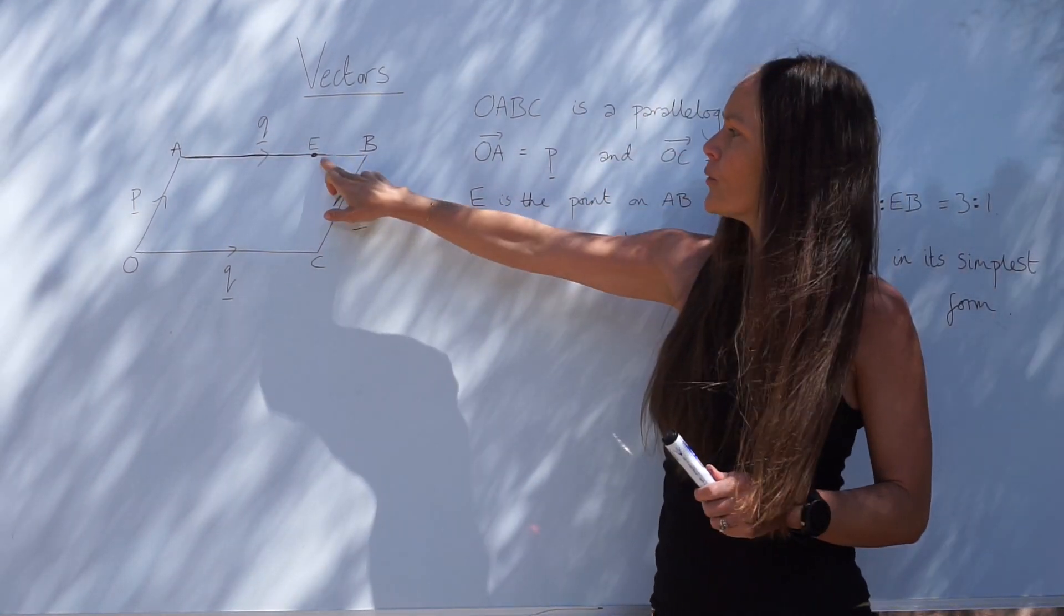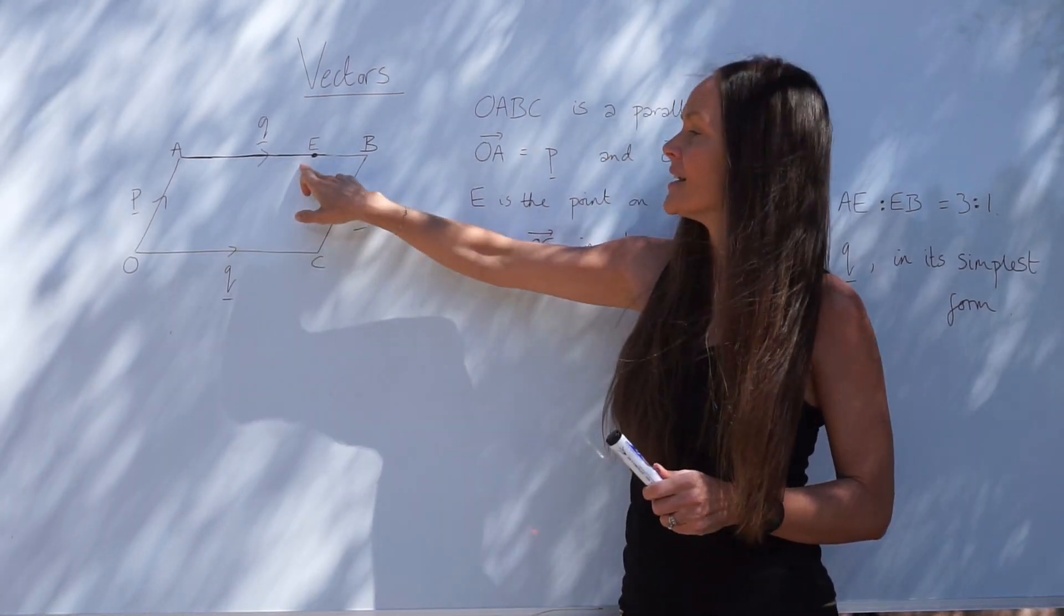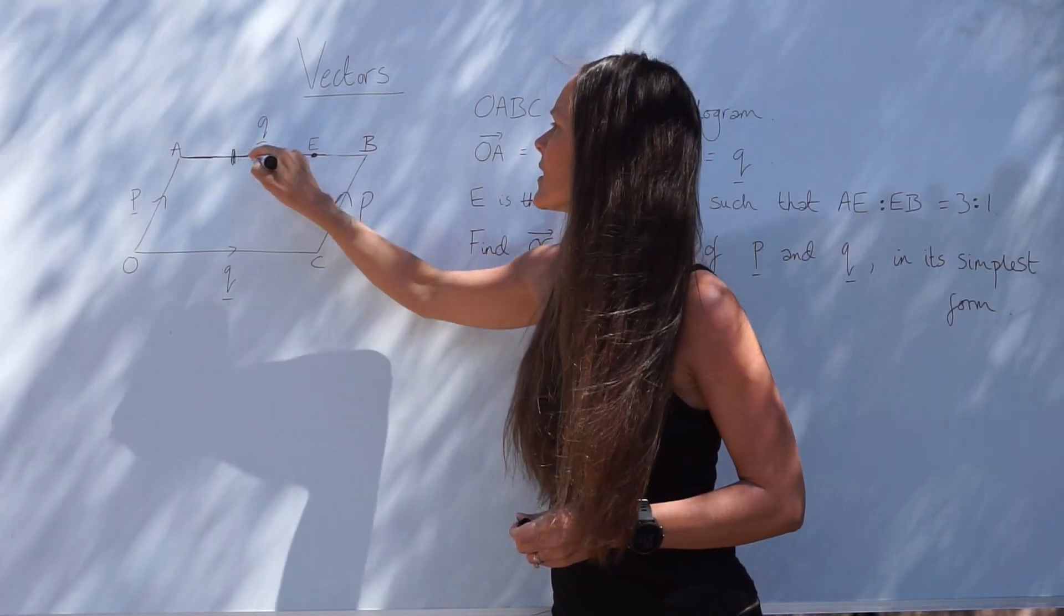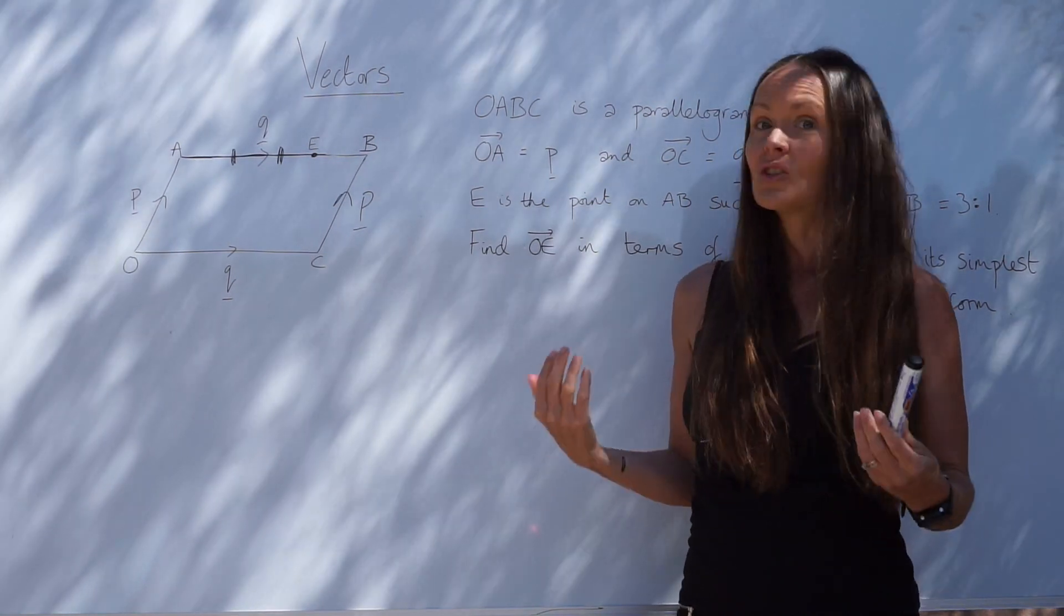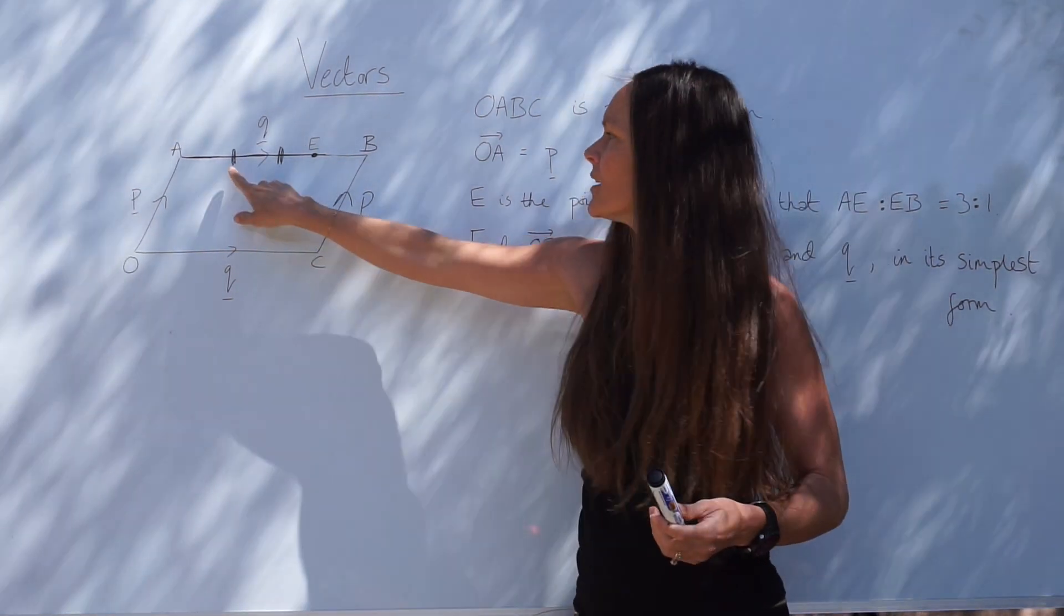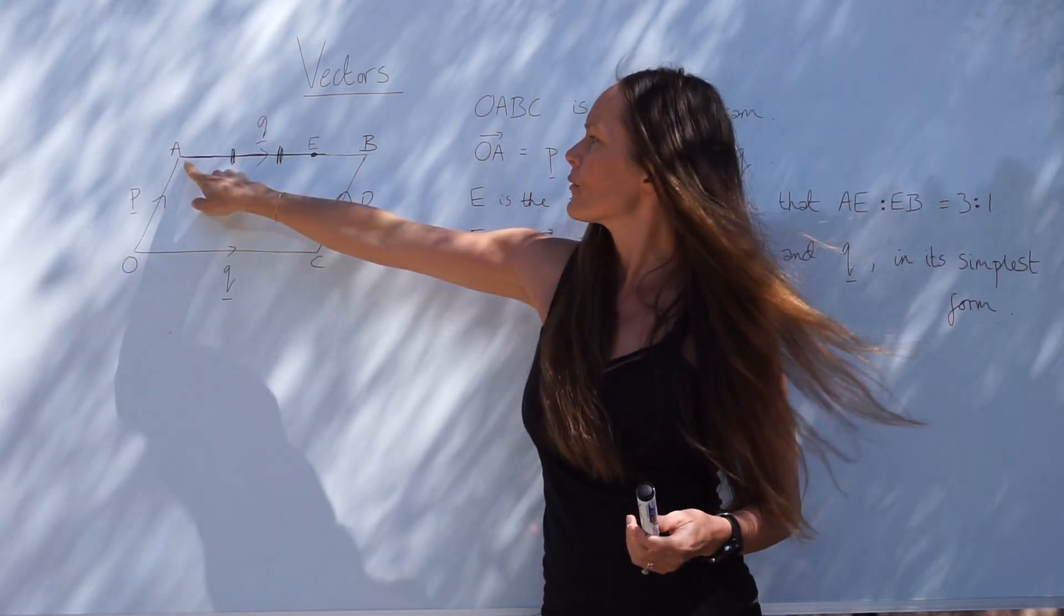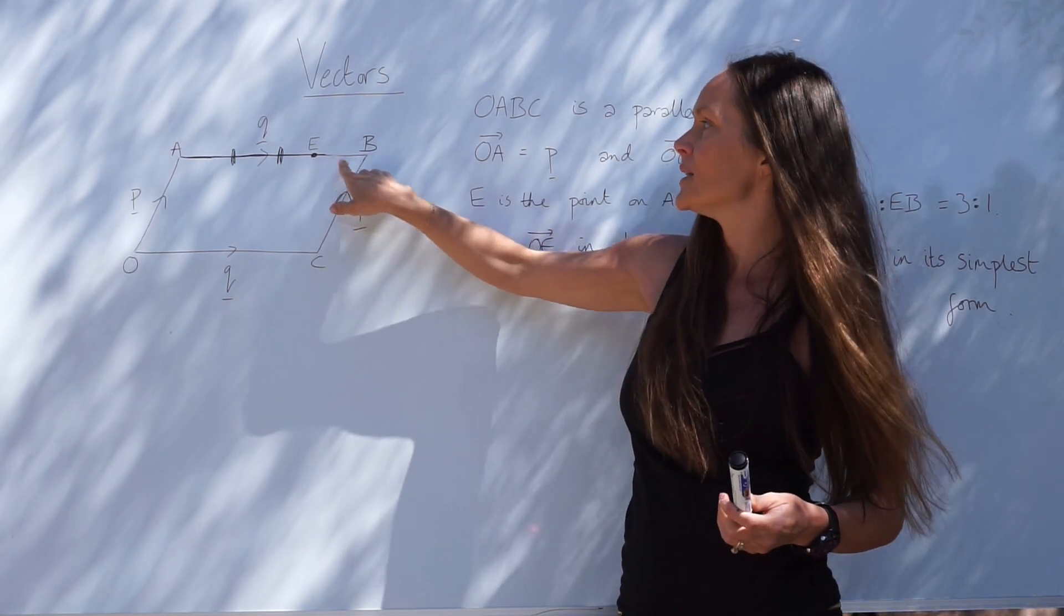Remember, we know that EB is just one part, and A to E is three parts. So you could just mark roughly some lines along that line AB to show that there are one, two, three, four parts altogether, three parts between A and E, and one part between E and B.